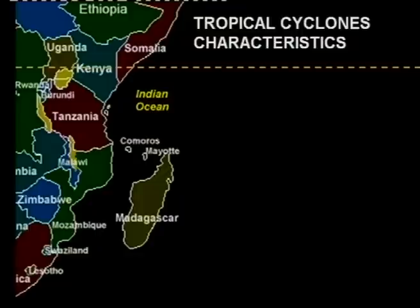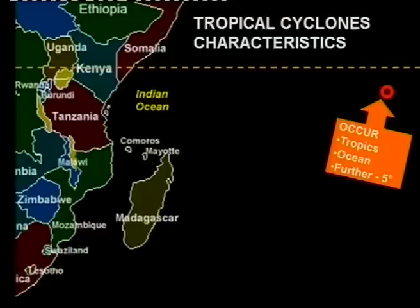Let's have a look at the characteristics of a tropical cyclone. I'm going to show you all the different characteristics on one slide — if you understand this, you will be able to understand tropical cyclones much more easily. The first important thing is where do tropical cyclones occur? They occur in the tropics, over the ocean, and they are found further than five degrees from the equator.